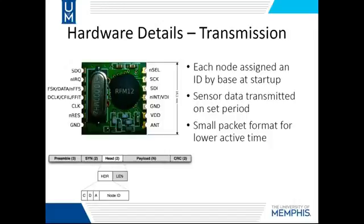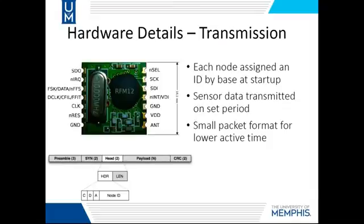The real-time nodes each are assigned a unique ID by the base station when they are started up, implemented in a similar fashion to a DHCP server. Sensor data from the nodes is transmitted to the base station using a node-specific update interval, transferred using the packet format displayed. A small packet format was selected in order to minimize the total transmission time and thus save power. The preamble and CRC are generated internally by the transceiver module. The header sets the source or destination address depending on the mode, as well as the payload length. The payload is the actual sensor data, encoded in a format similar to the next slide.